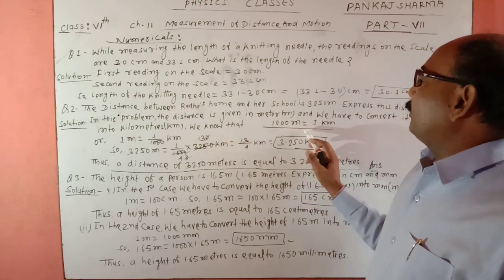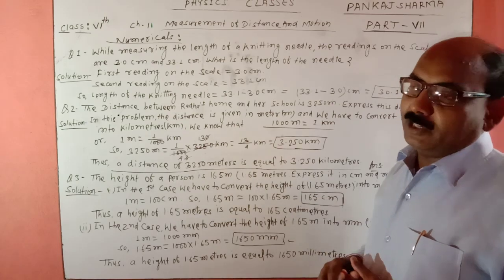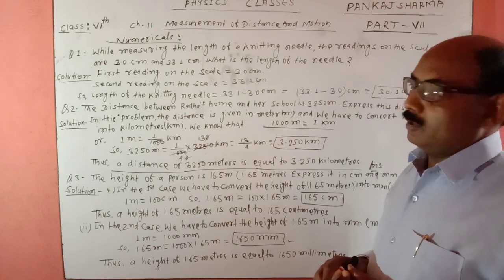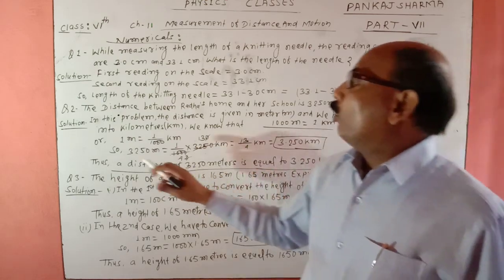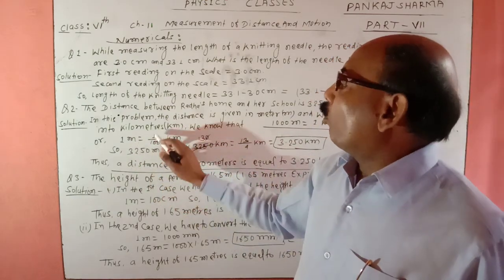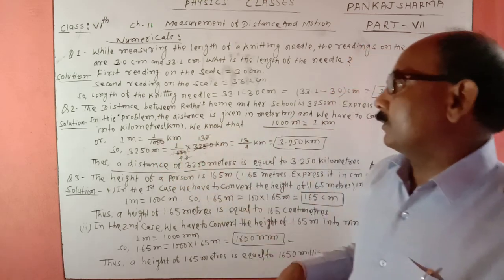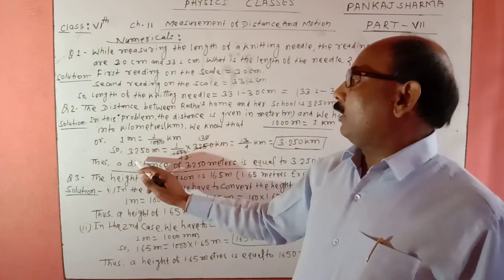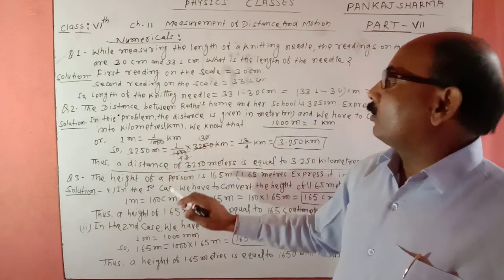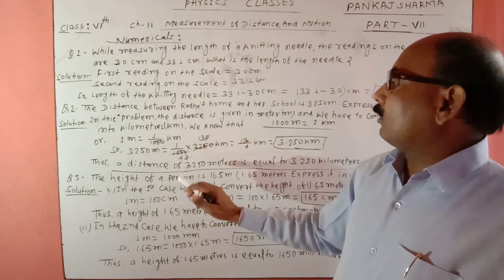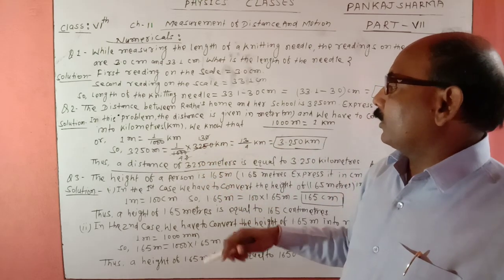हम लोग जानते हैं: 1000 meter equal to 1 kilometer, 1 kilometer equal to 1000 meter होता है। So, 1 meter equal to 1/1000 kilometer. Putting the value: 3,250 meter equal to 1/1000 into 3250 kilometer.